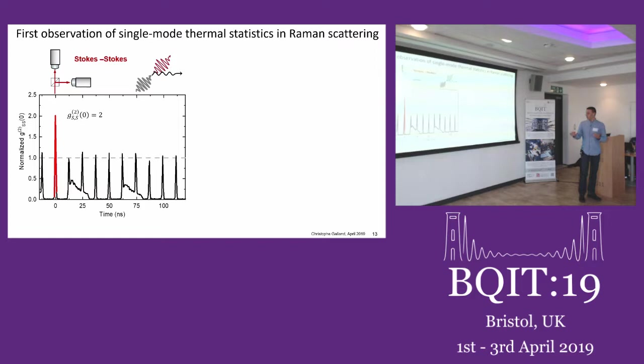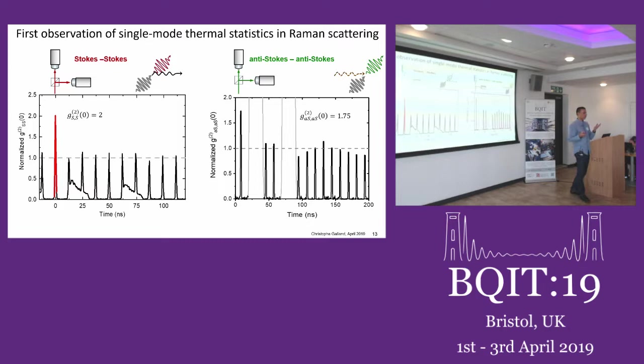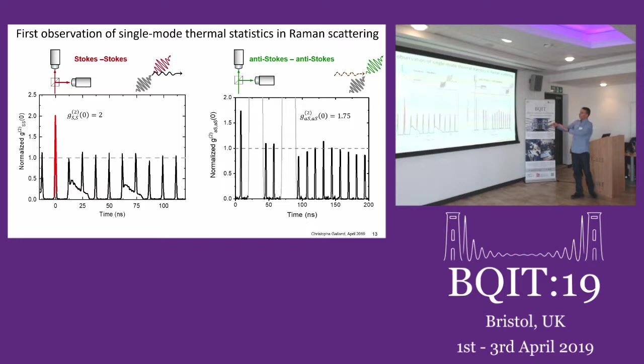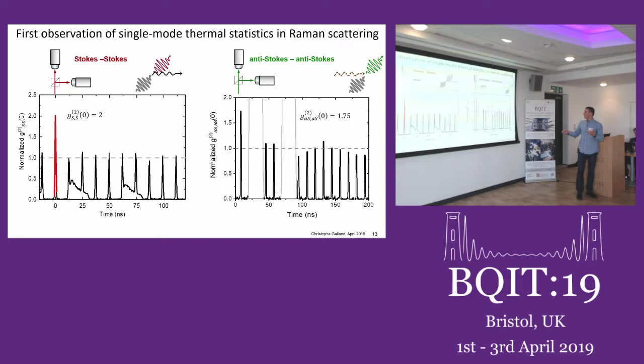If we do this on the anti-Stokes, for a slightly different reason, we also get thermal statistics. Here it's easier to understand because we don't have the write step — we just look at the anti-Stokes alone, so we are probing the thermal state of the phonon, this residual thermal occupancy in our sample. We convert it to an anti-Stokes photon, characterize the correlation function, and get something close to 2 — anyway above 1.5, which is again an important threshold. The noise is a bit more pronounced here because the signal is weaker — we haven't created a phonon first.